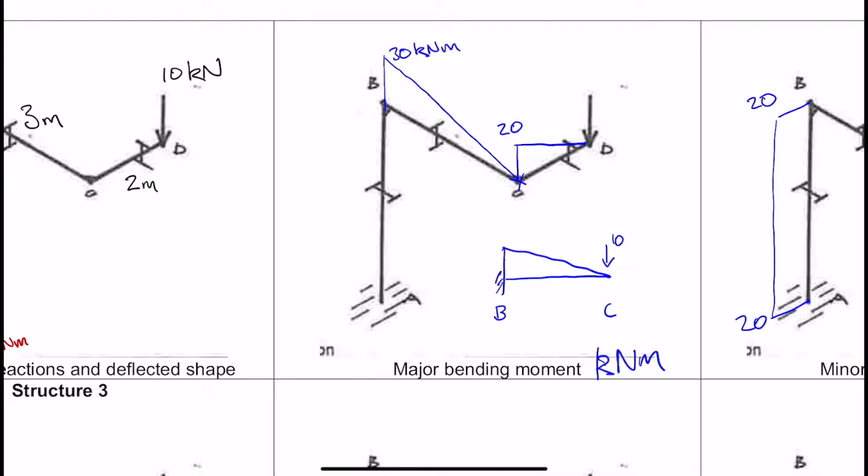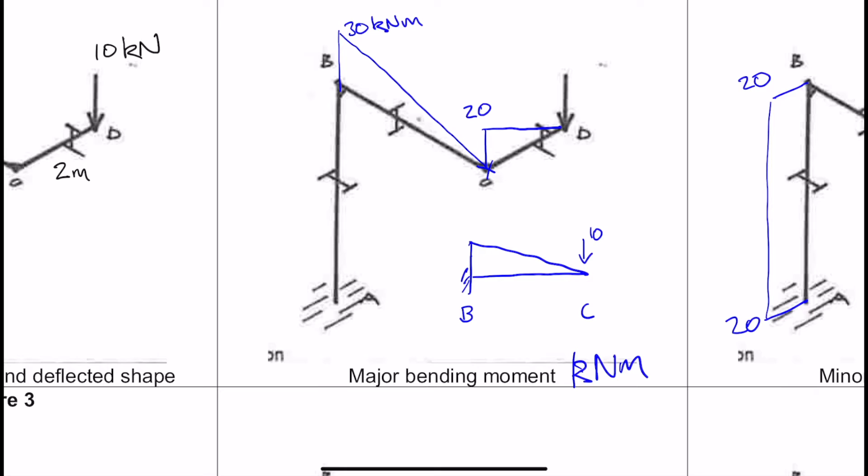Okay, big thing to realize is that there is a discontinuity at C along the major axis bending. And then how does that major axis bending at B transmit into column AB? So that will also start at 30 there, and then that will remain constant, because this lever arm does not change either. This will remain constant as you go down AB.